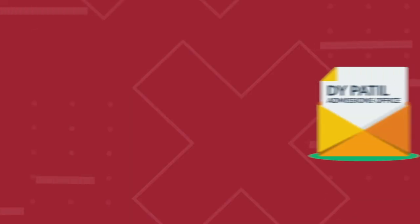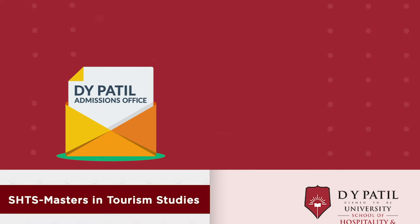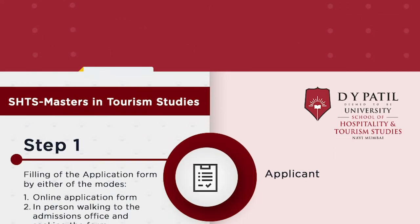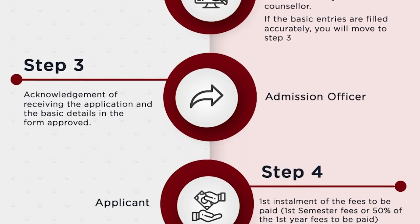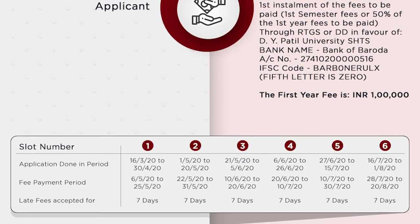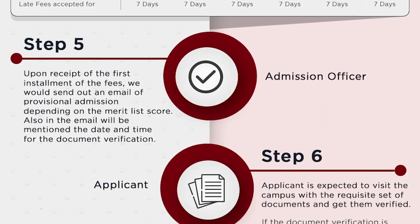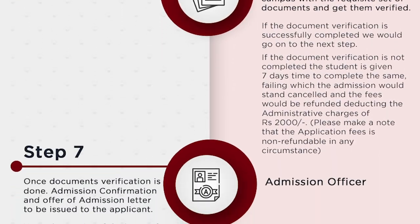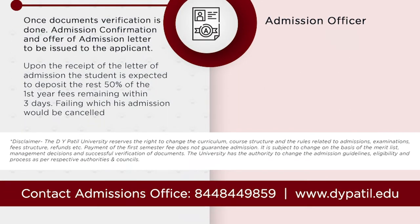Step 2. After filling the form and paying the application fee, you will receive an email from the admissions office. This email will introduce you to DY Patil University with details about your course. We'll also provide you contact details of an assigned admission counsellor for guiding you further.